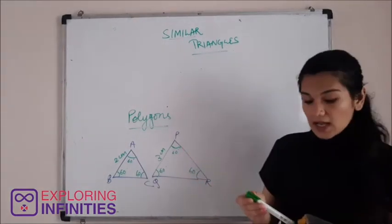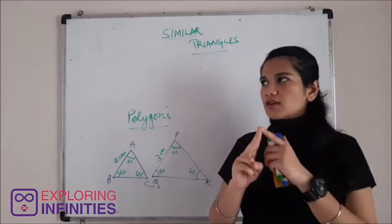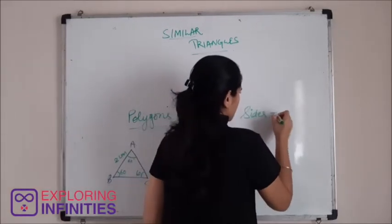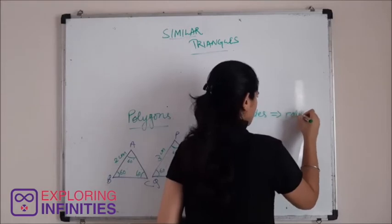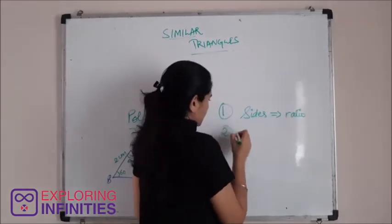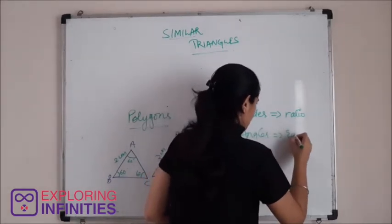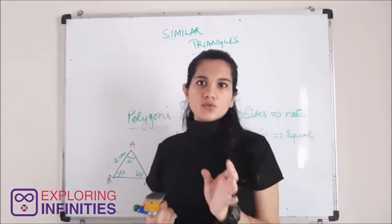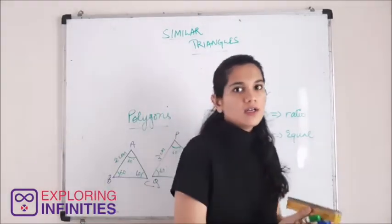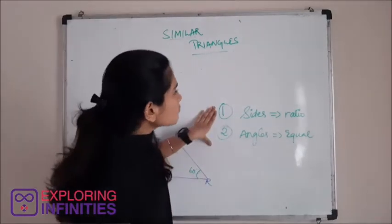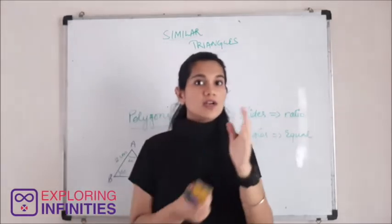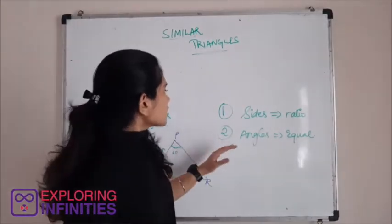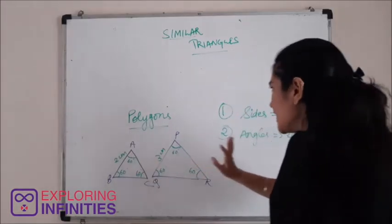There are basically two conditions that you have to keep in mind for this whole chapter. First: sides in ratio. Second: angles equal. This means that in any two figures, if you want to prove that they are similar, we have to prove these two conditions. The first condition is that the corresponding sides should be in a ratio or should be proportional, and the second condition is corresponding angles are equal.